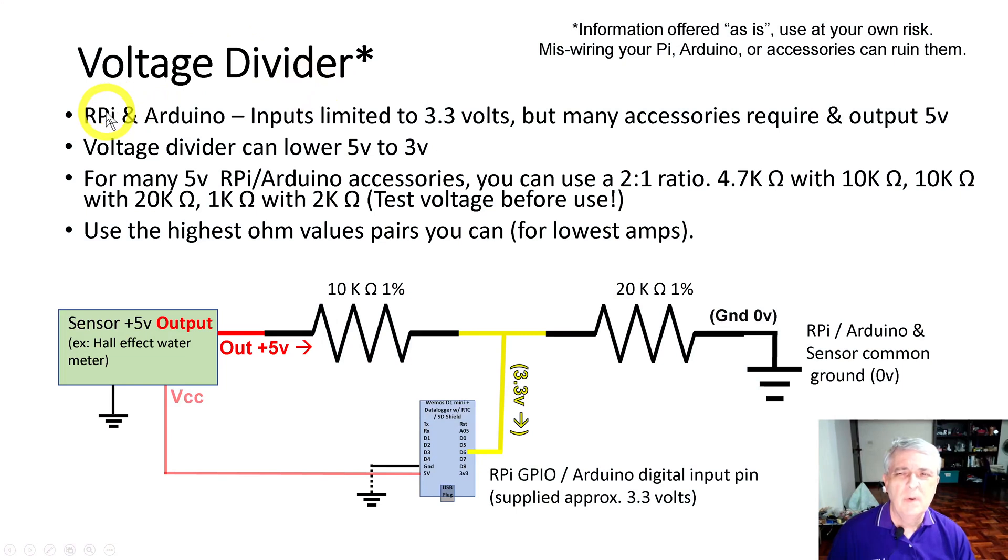A lot of times when doing work with Raspberry Pi or Arduino, the inputs to the device are limited to 3.3V but many accessories require or output 5V. For example, right now I'm dealing with a water meter that takes in 5V and outputs 5V. If I put that raw output directly into my Arduino or Raspberry Pi, I can burn out the input, which is a bad thing.